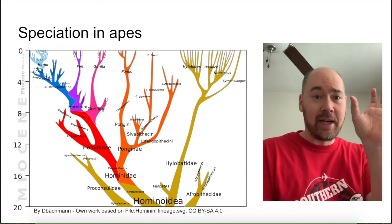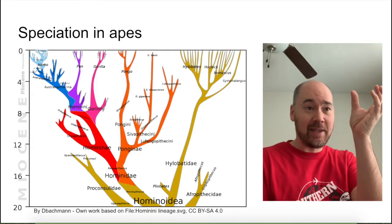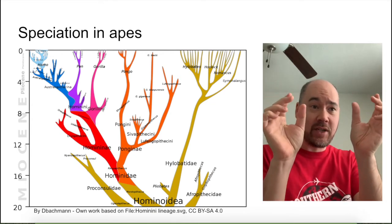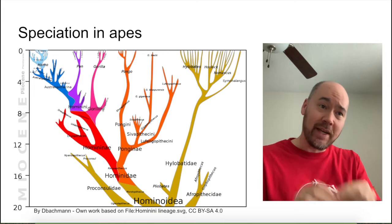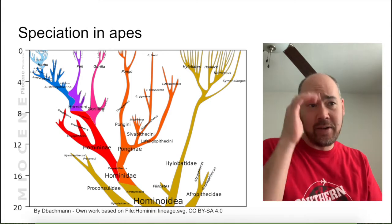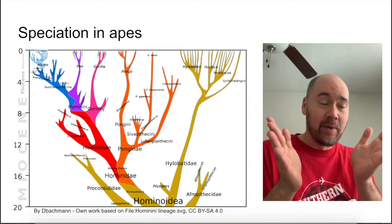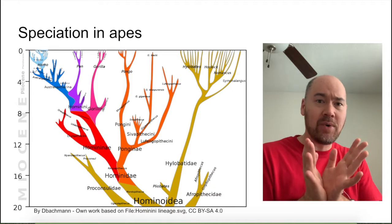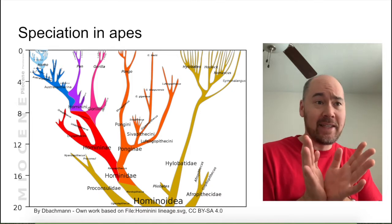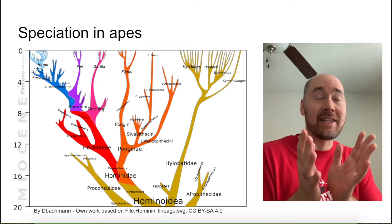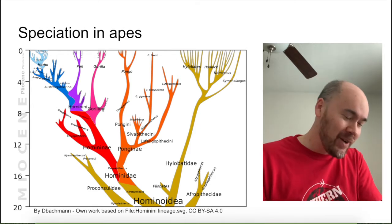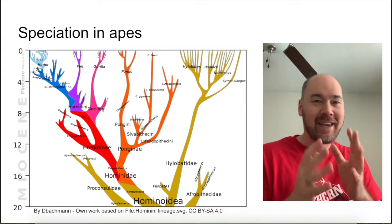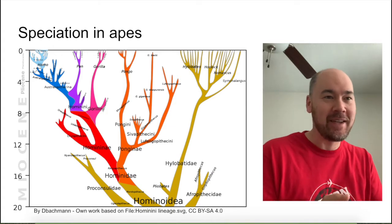When you have Homo, that includes us, Homo sapiens, and then you have Pan, which is chimpanzees. If you trace that tree down, you see that there's a place where they intersect. That is the last common ancestor of both humans and chimpanzees — about five million years ago, there was an animal whose descendants became humans on one hand and chimpanzees on the other. Not the same descendants, obviously, but different groups of descendants.